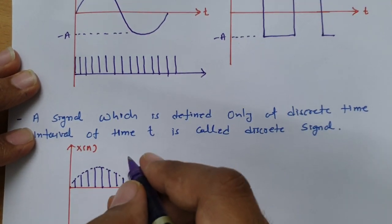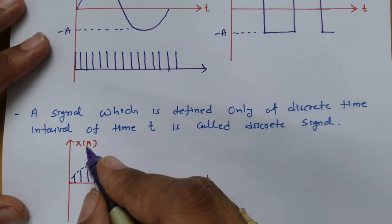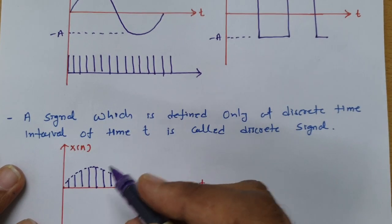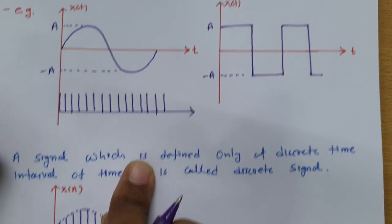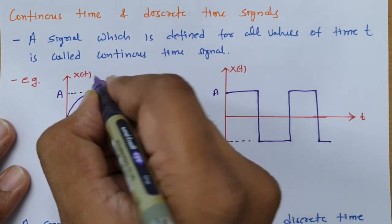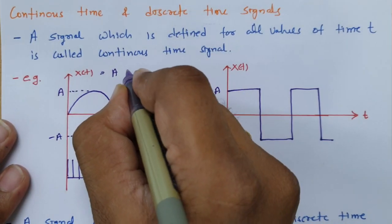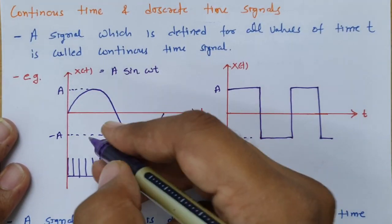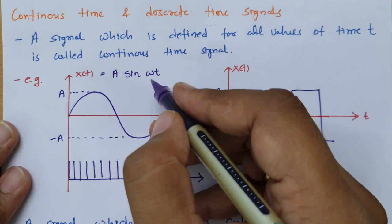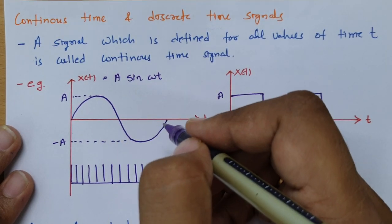One thing we need to note: a continuous time signal is denoted by x(t) and a discrete signal is denoted by x(n). Now let us see how we can represent these signals as functions. The continuous time sine signal with amplitude A can be written as A sin(ωt). If it has a phase, we write A sin(ωt + φ), but here phase is zero, so we note it as A sin(ωt).